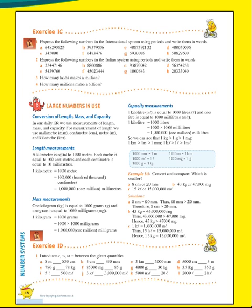Let's see the second one: mass measurement. One kilogram is equal to thousand grams. One gram is equal to thousand milligrams. So one kilogram equals thousand grams, and one kilogram equals one million milligrams.